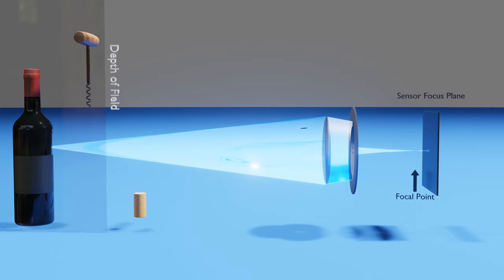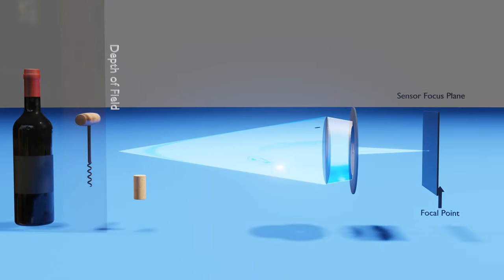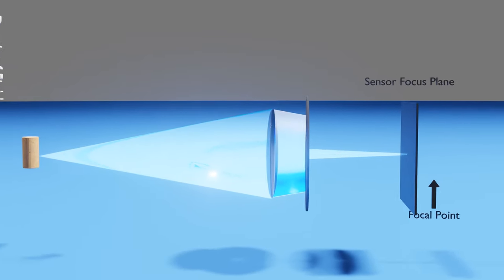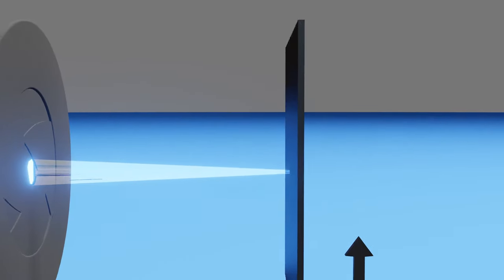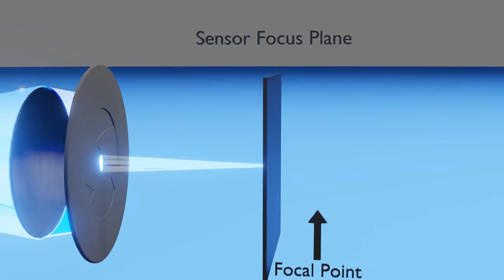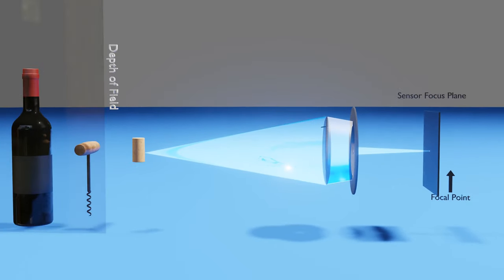The same is true for the cork as the aperture blocks most of the rays. Although they are once again read before they converge into the focal point, they are concentrated enough to be considered in focus. This therefore expands our depth of field.